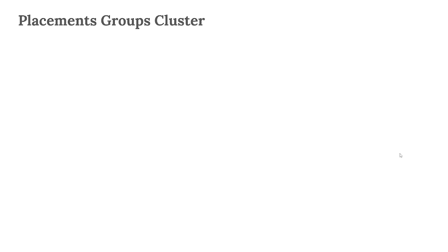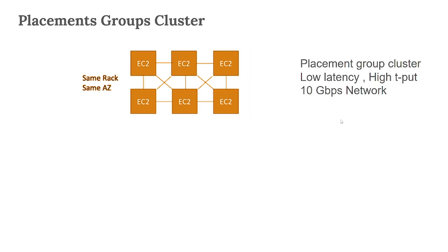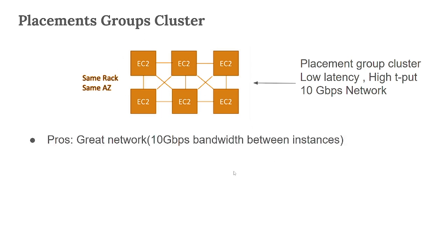Now let's start with Placement Group Cluster. In this placement group, all the EC2 instances are interconnected — you can see all the EC2 instances are connected to each other in the same rack and in the same Availability Zone. This placement group gives you low latency and high throughput, so in a network where low latency and high throughput is required, we can use this placement group.